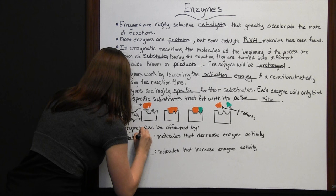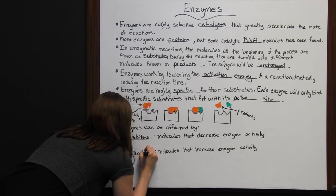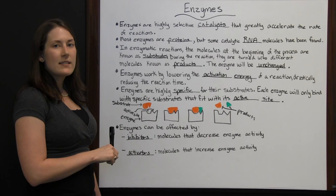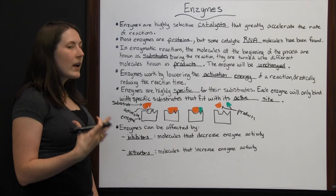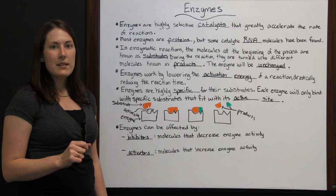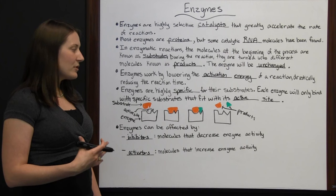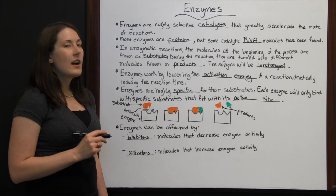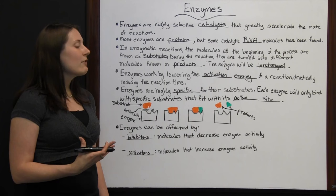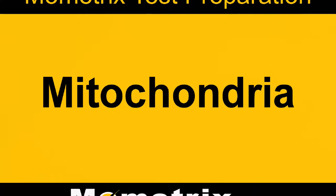Enzymes can be affected by inhibitors, which are molecules that decrease enzyme activity, and by activators, which are molecules that increase enzyme activity. The main thing to remember is that enzymes are highly selective catalysts that increase the rate of a reaction by lowering the activation energy needed, and at the end they remain unchanged.